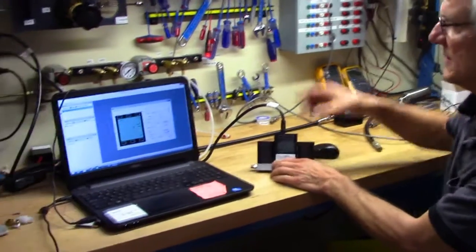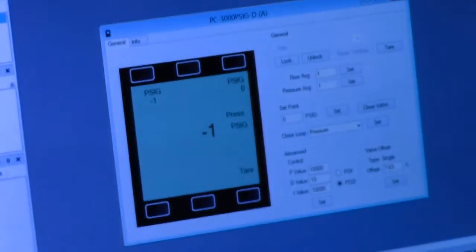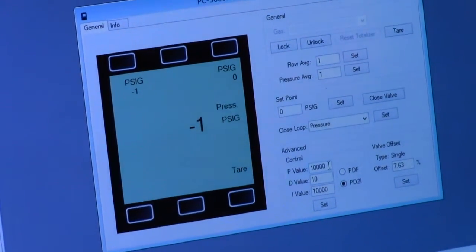We go to the software. In this case, we are using FlowVision software. We go to the main screen. And the P, I, and the D values are shown in these windows.